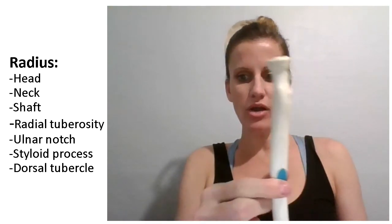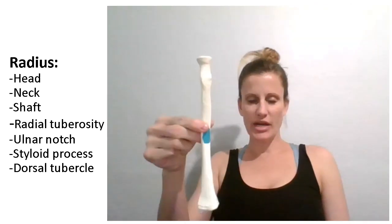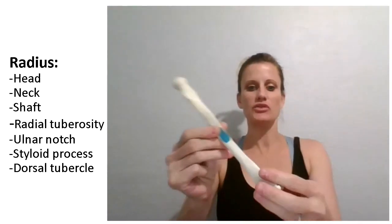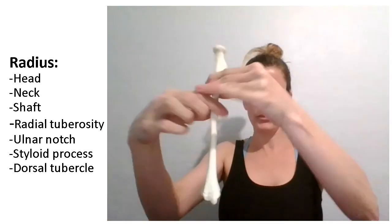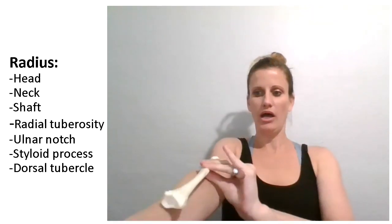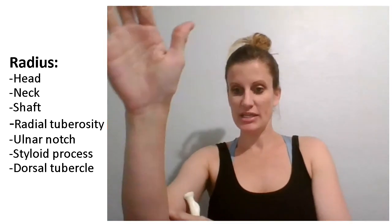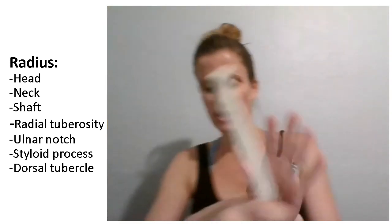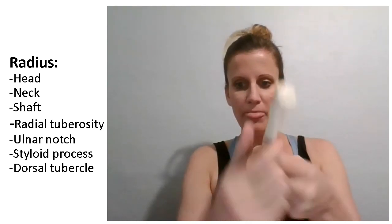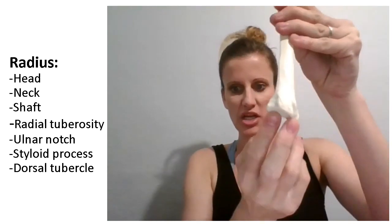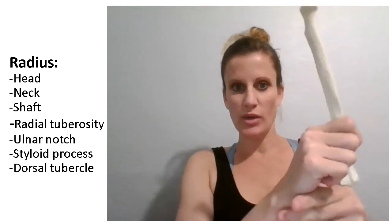Today we're going to look at all of the specific details of the radius. This is the radius — it is one of two bones that sits in your forearm, on the thumb side. It articulates with the humerus proximally, so this is the portion that articulates with the humerus at the elbow. And then the distal portion of the radius articulates with the scaphoid bone, which is one of your carpal bones.